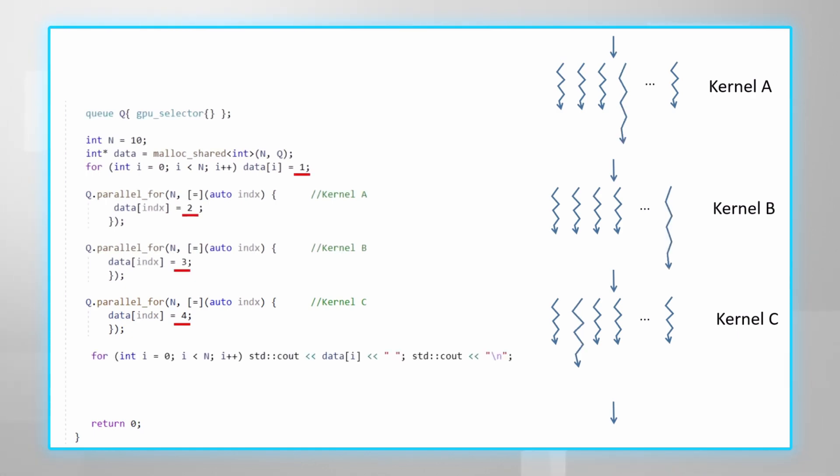All of these kernels will be running asynchronously and will compete for the data. There's no guarantee what will be the execution order, and hence no way to know the final results as they could be indeterminate.